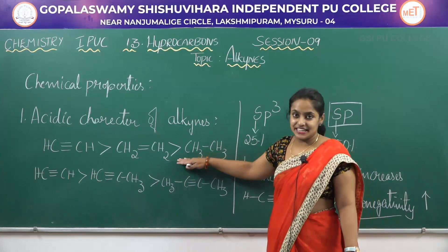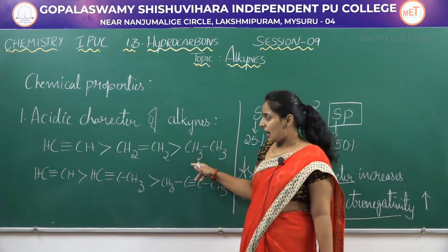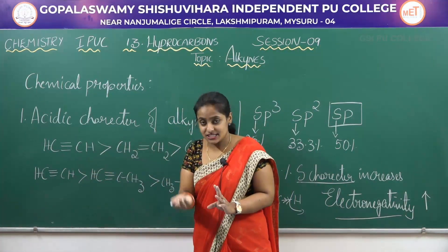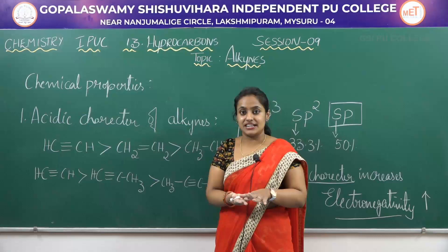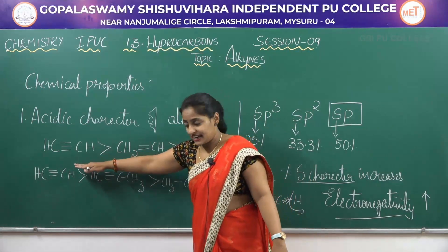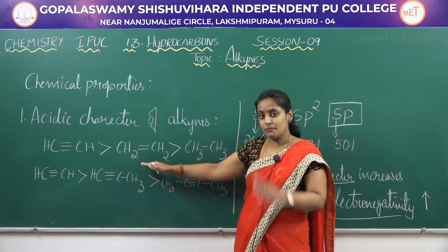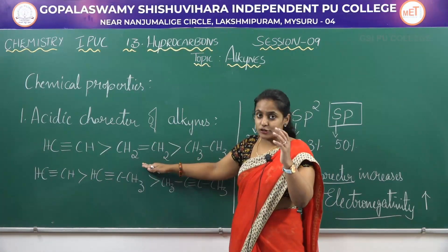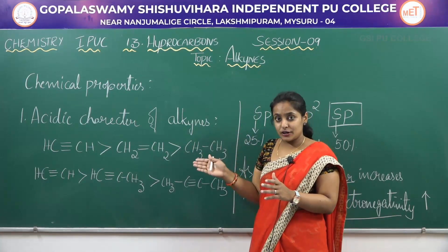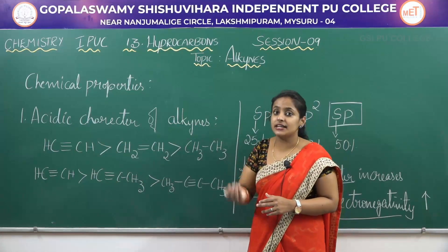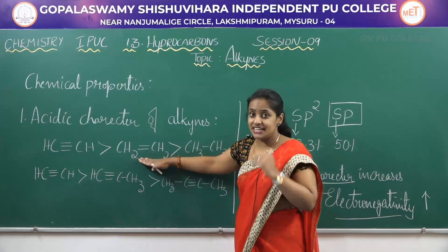When comparing acidic character: alkynes have SP hybridized orbitals with 50% S character, giving higher electronegativity. Alkenes have SP2 hybridization with lower S character and lower electronegativity. Therefore acetylene is more acidic than ethylene. Alkynes are more acidic than alkenes, which are more acidic than alkanes. This is the trend in acidic character.